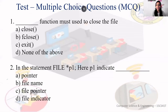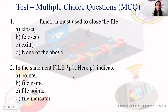Quiz questions: Which function must be used to close the file? Answer: fclose — option B. In the statement FILE* p1, what does p1 indicate? Answer: it is a file pointer — option C. FILE* p1 is a file pointer, not just a regular pointer like int* p1.